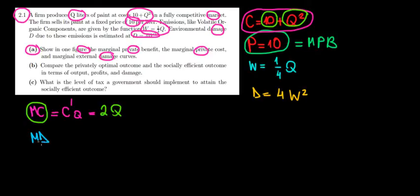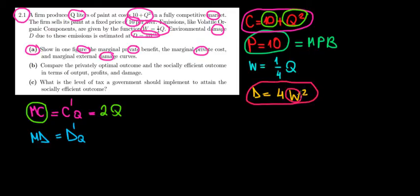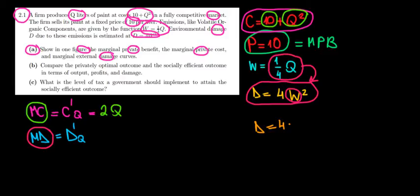Now we also need the marginal damage. The marginal damage is the derivative of the total damage with respect to quantity — analogous to marginal cost. The damage function depends on W, which is itself a function of Q. So we substitute W equals (1/4)Q into the damage function to express damage as a function of quantity, then differentiate.